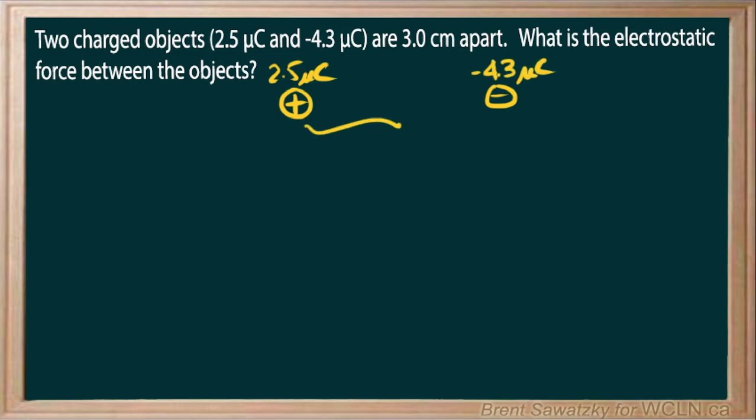We're told that we're three centimeters apart, and one positive, one negative. What does that tell us? Well, that tells us they're going to attract, so we know the electrostatic force in this case is an attractive force.